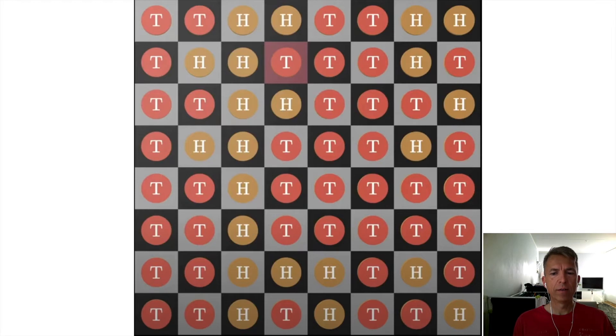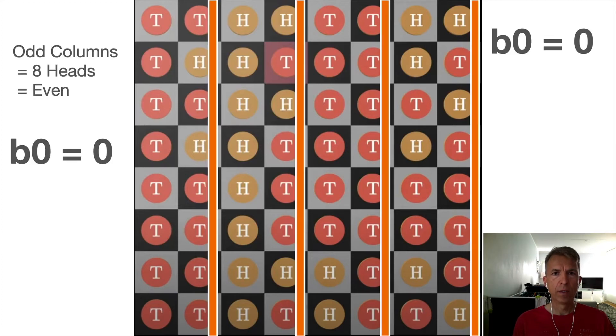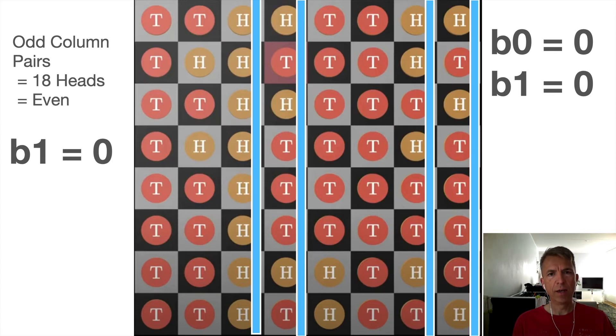So now we can define this example board to encode a binary number in the following way. So we count the number of heads in the odd columns. We get eight heads. This is even. Bit number zero is zero. We count the number of heads in the odd column pairs. We get 18 heads. This is even. Bit number one is zero.